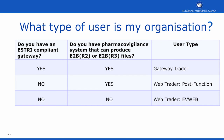This table summarises what type of user your organisation will be. If you have an S3-compliant gateway and are able to produce E2B R2 or E2B R3 files, the user type will be Gateway Trader. If you are able to produce R2 or R3 files but do not have an S3-compliant gateway, the user type will be WebTrader POST function. If you have neither of these capabilities, then EVWeb will be the user type.